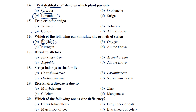Regarding dwarf mistletoe: among Phoradendron, Arceuthobium, and Agentia, Arceuthobium is considered the dwarf mistletoe. Regarding family: Striga belongs to the family Scrophulariaceae, while Loranthus and Orobanche belong to Loranthaceae and Orobanchaceae respectively. Cuscuta belongs to Convolvulaceae.